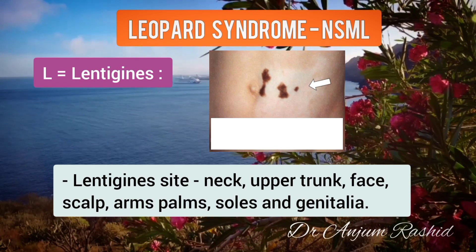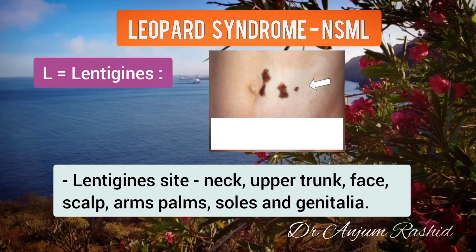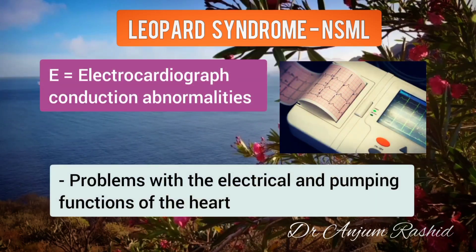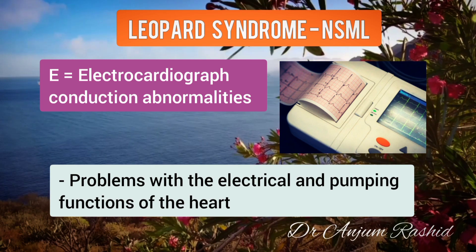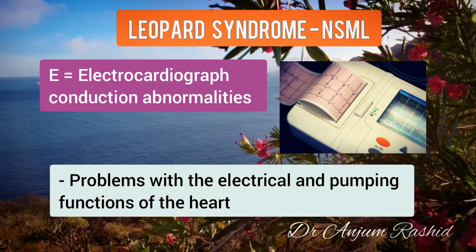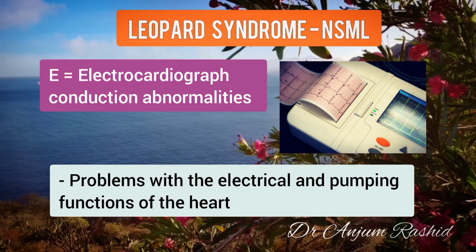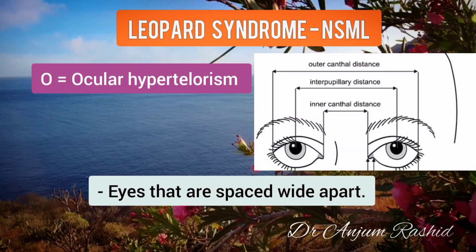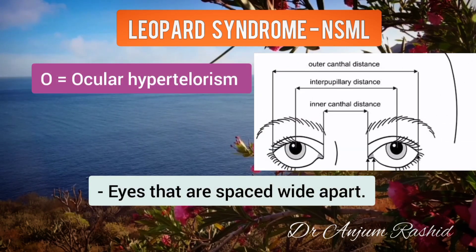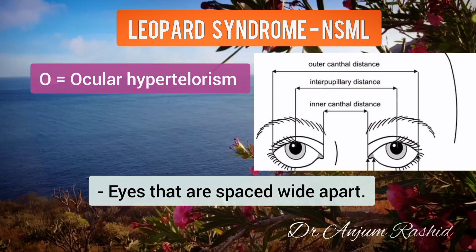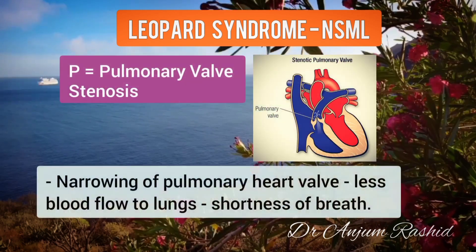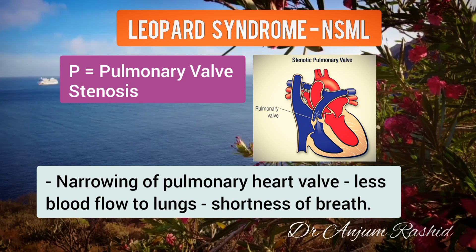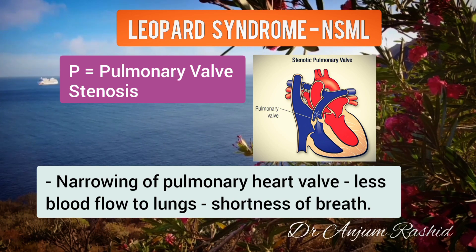Lentigines may also appear on the arms, palms, soles, and genitalia. E stands for Electrocardiographic conduction abnormalities, meaning there is a problem with the electrical and pumping functions of the heart. O stands for Ocular hypertelorism, which means the eyes are spaced wide apart. P stands for Pulmonary valve stenosis, meaning narrowing of the pulmonary heart valve.